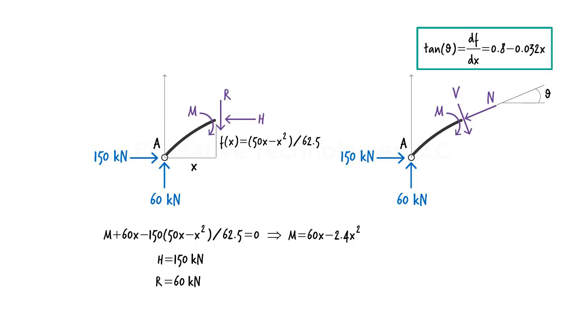Knowing the tangent of an angle, we can determine the angle itself. Then we can express n and v in terms of h, r, and angle theta like this.